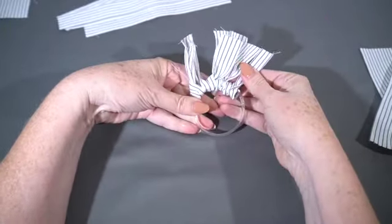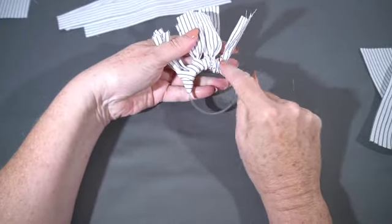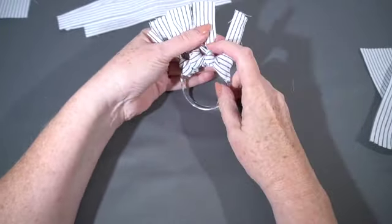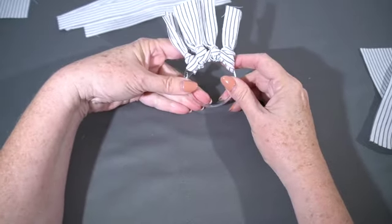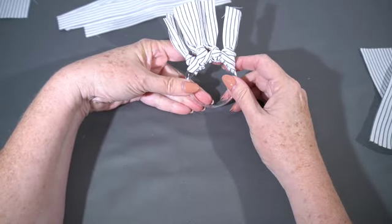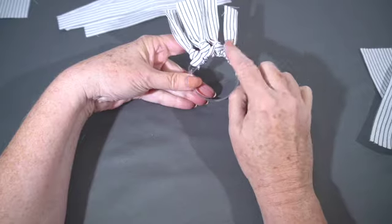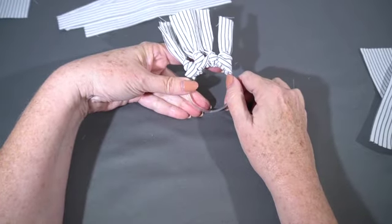And the reason, here's the reason we keep going the same way. Here's one side of the knot. Here's the other side of the knot. It looks just a little bit different. And so that's the reason I have been going all in the same direction, because I want all the knots to look the same all the way around.